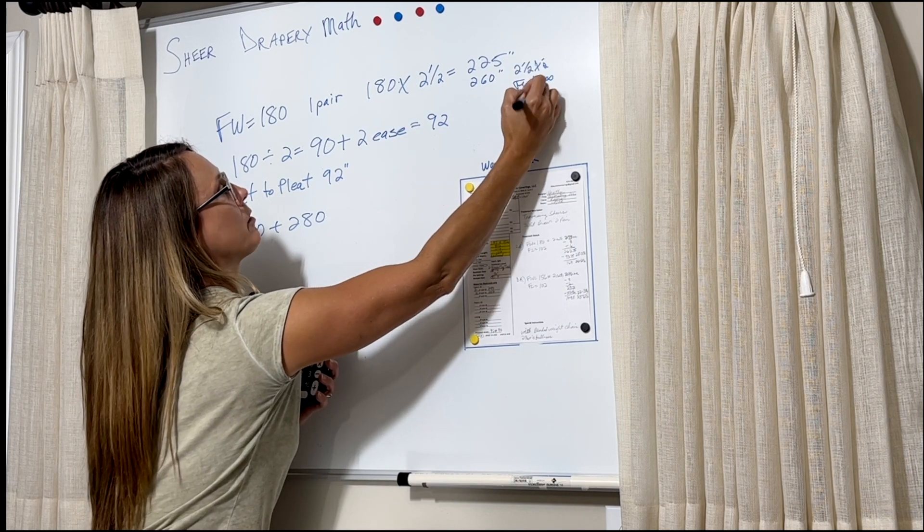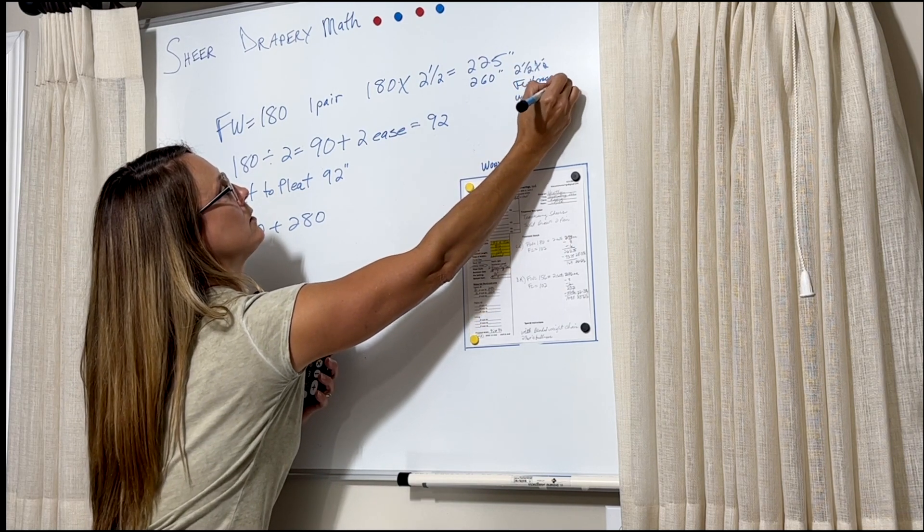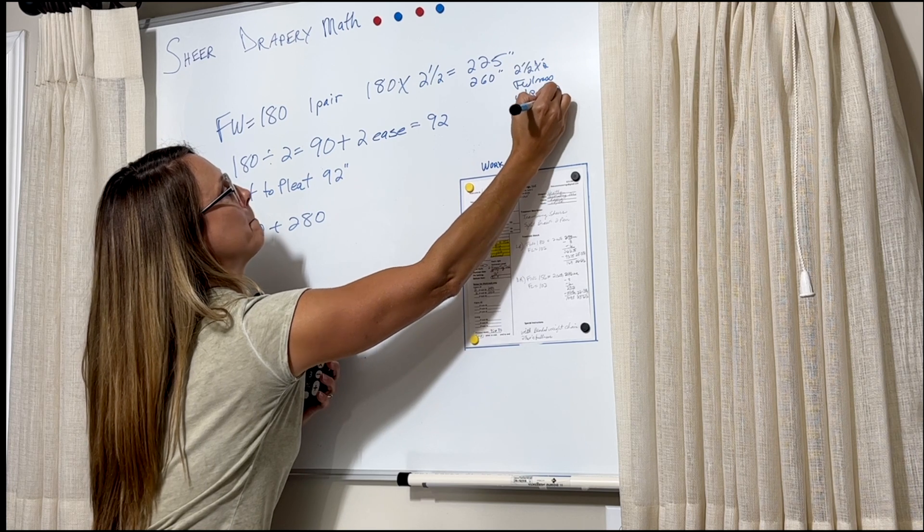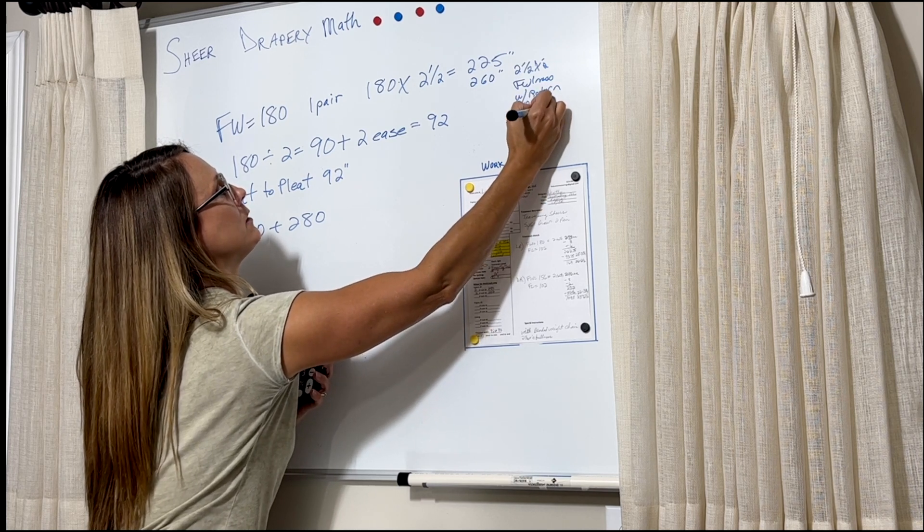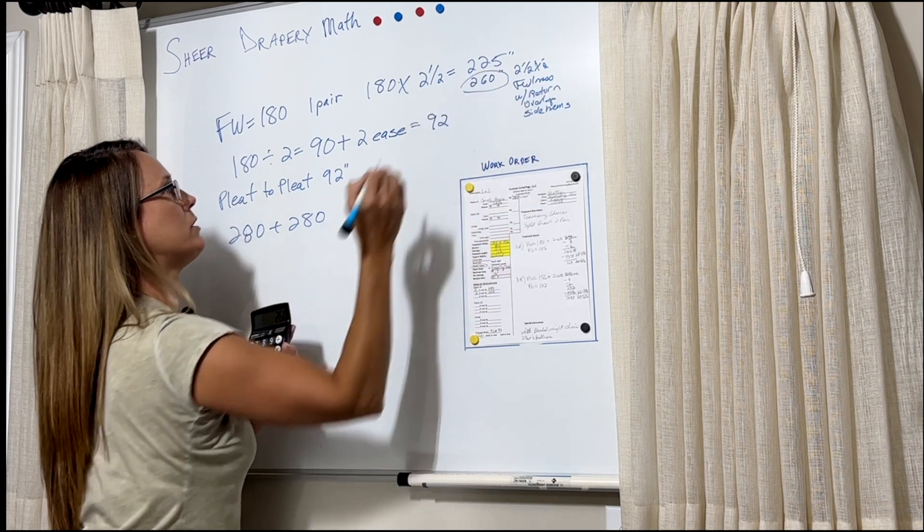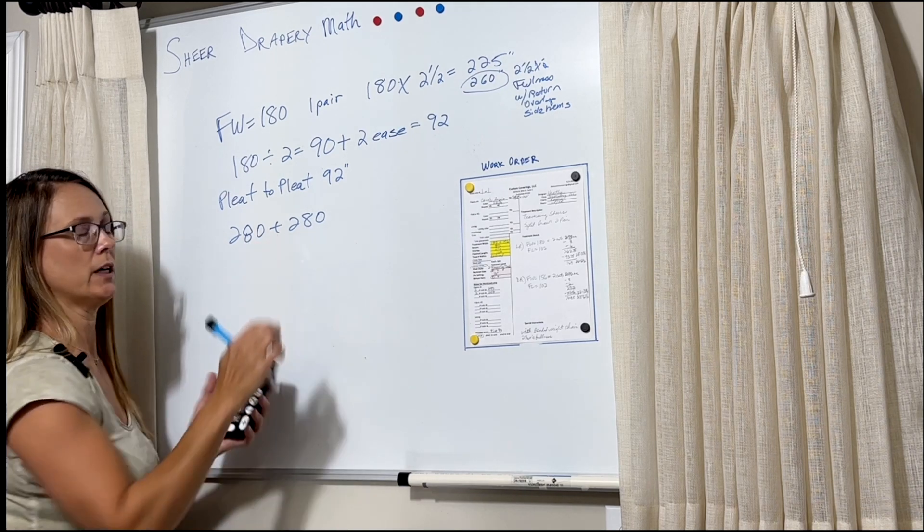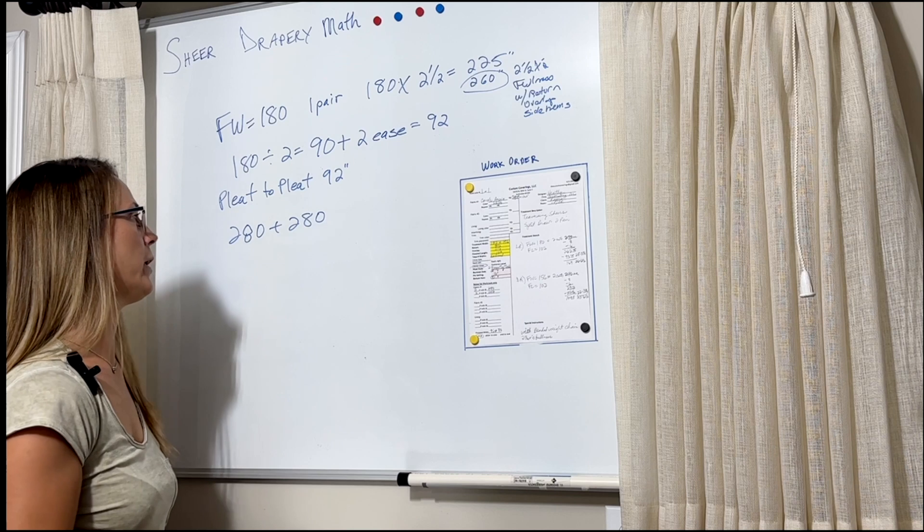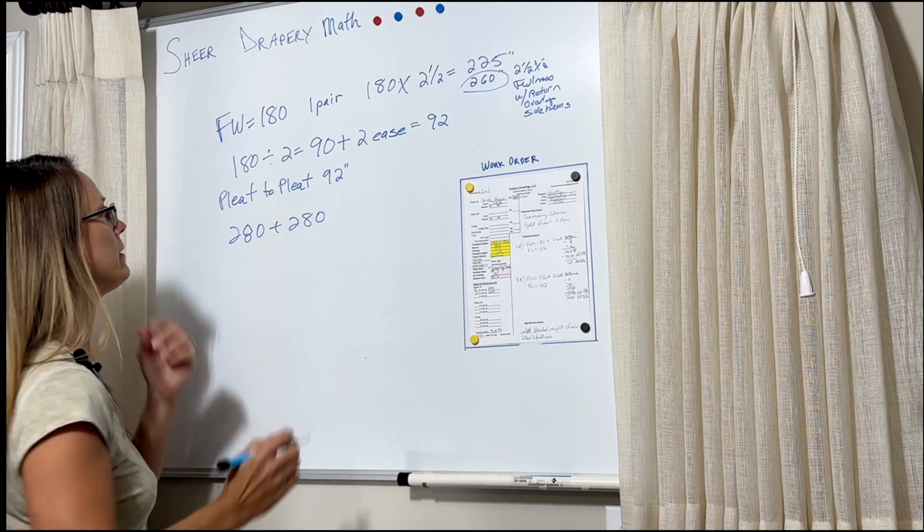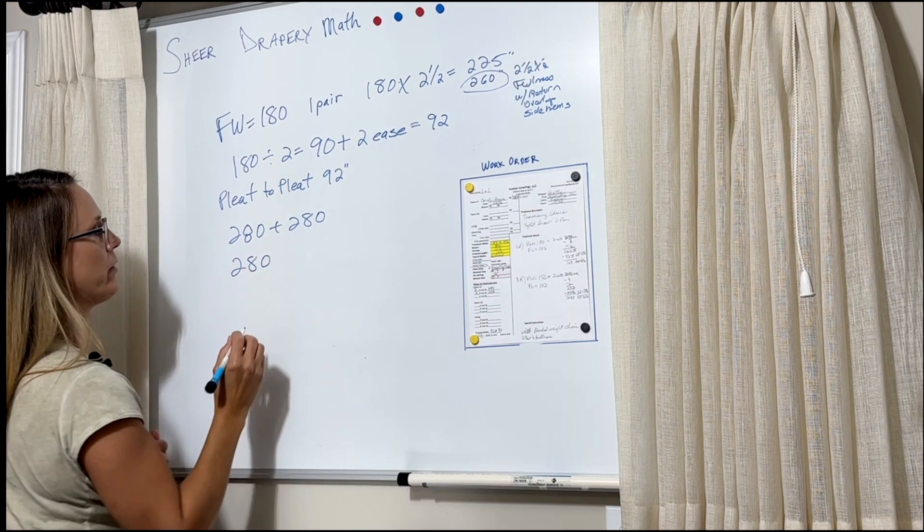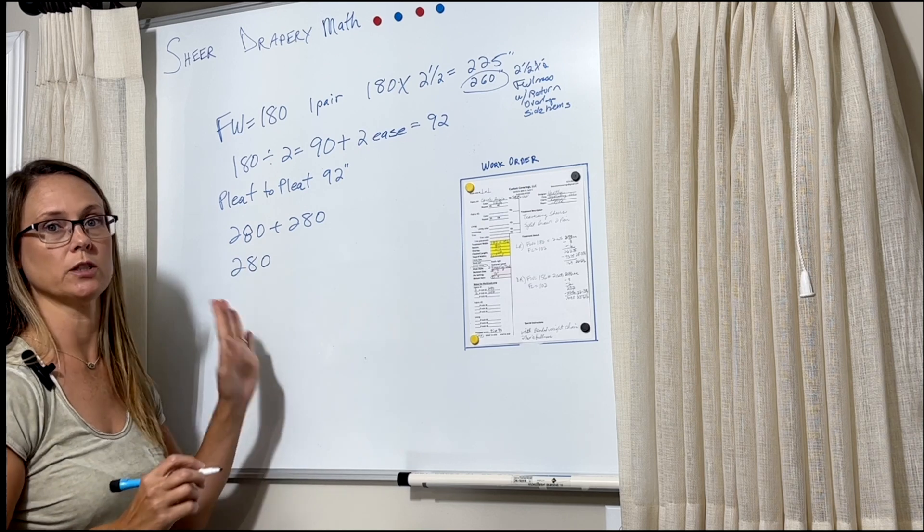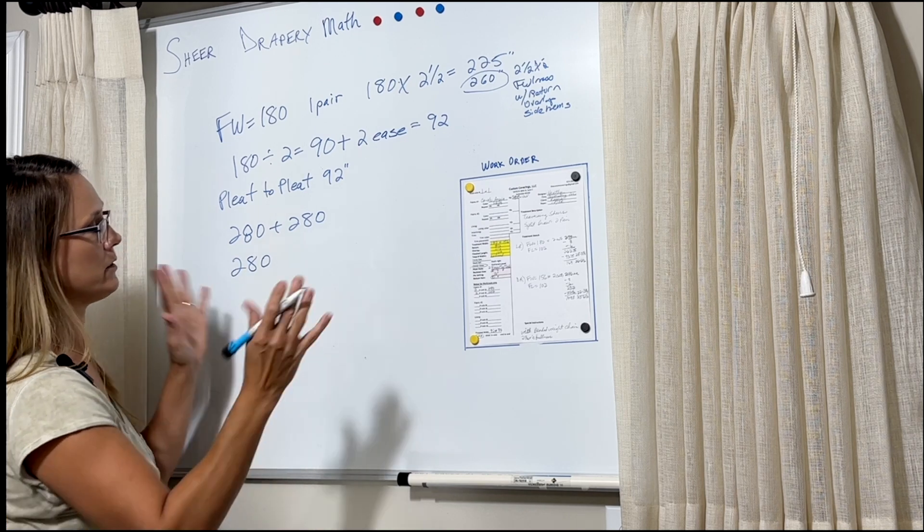So if I did that, then we would have needed 260 inches at 2.5 times fullness. So this is width, return, and lap, and side hems figured out. 260 would have been ideal, but I had enough to cut even a little bit more than that. So I went ahead and added that in. So we have 280 inches of fabric for each panel. I'm just going to talk about one at a time since they're the same.